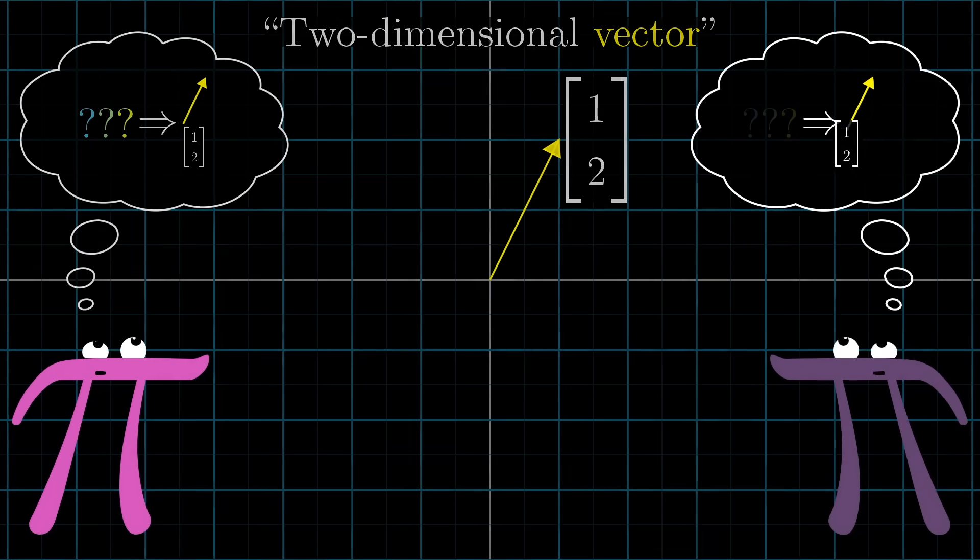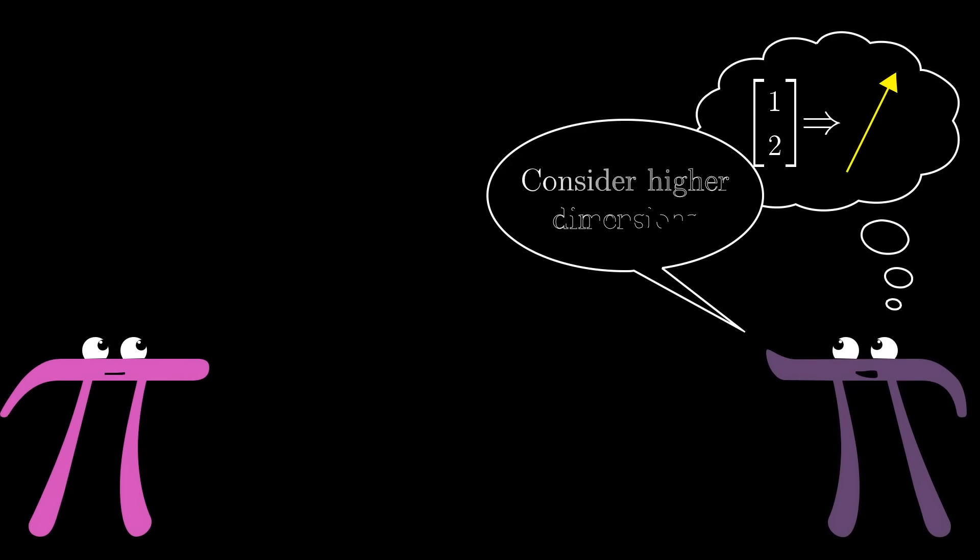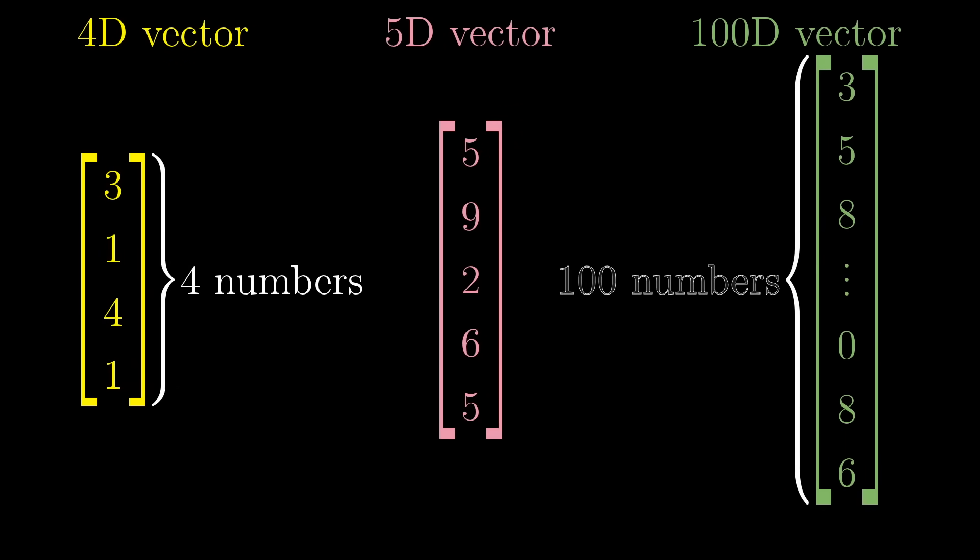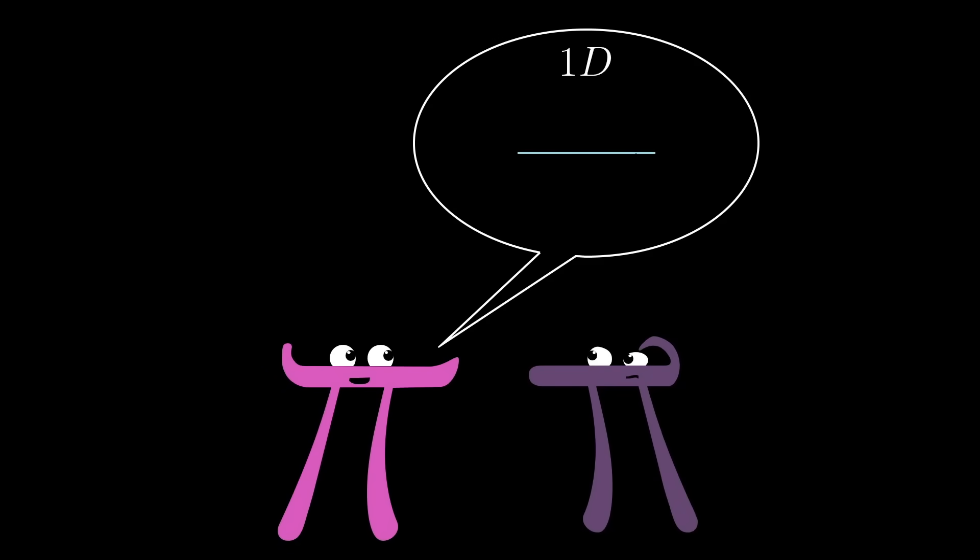On the one hand, defining vectors as primarily being a list of numbers feels clear-cut and unambiguous. It makes things like four-dimensional vectors or 100-dimensional vectors sound like real, concrete ideas that you can actually work with. When otherwise, an idea like four dimensions is just a vague geometric notion that's difficult to describe without waving your hands a bit.